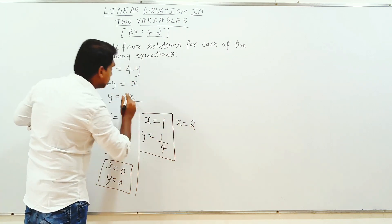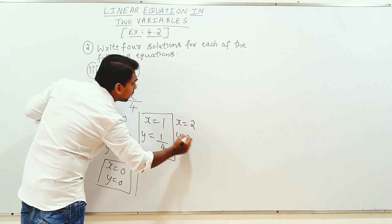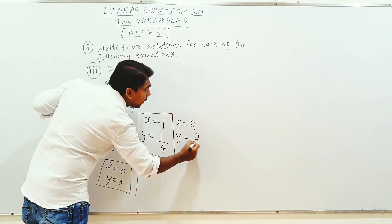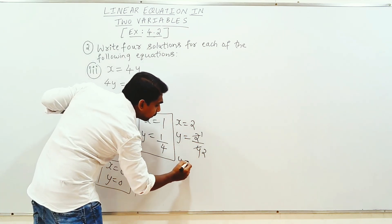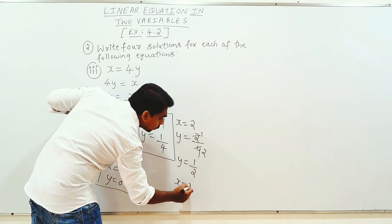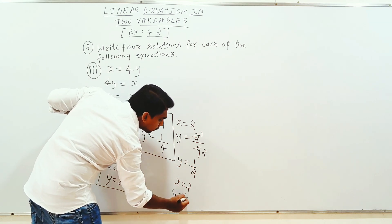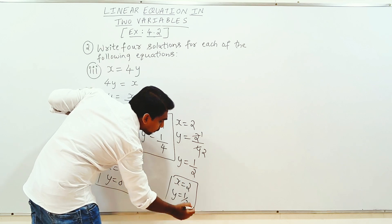Next, x equals 2. y is equal to 2 by 4, so y value is equal to 1 by 2. x equals 2, y equals 1 by 2. This is the third solution.